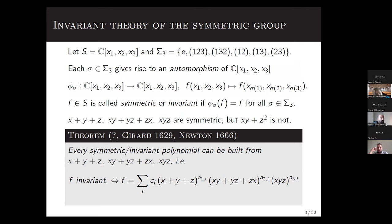Every permutation in the symmetric group gives rise to an automorphism of the polynomial ring, by mapping a polynomial in three variables to the polynomial obtained by permuting the variables as forced by the chosen permutation. The terminology is that a polynomial is called symmetric or invariant if it remains unchanged for all permutations in the symmetric group. For example, x + y + z is invariant because no matter how I flip the variables, I still get the same polynomial.